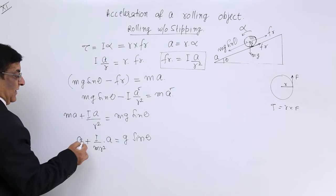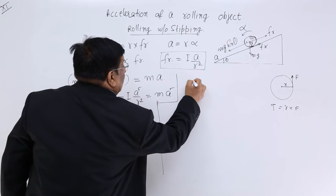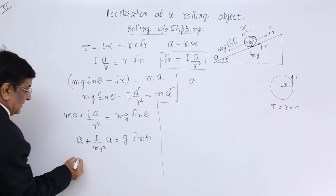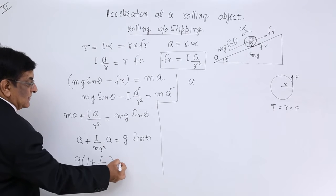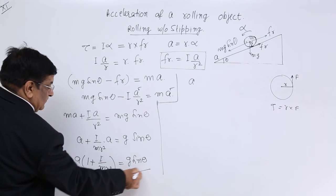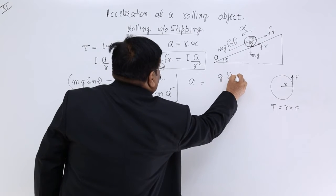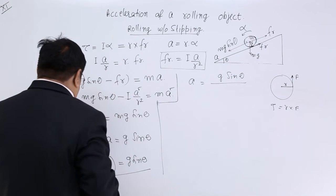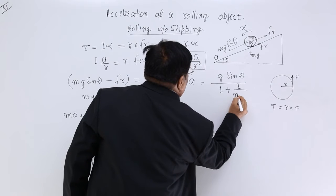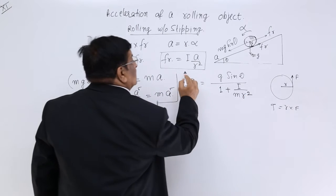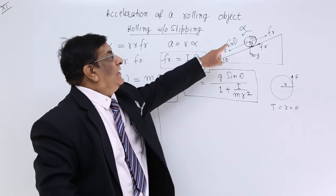Taking A as common factor: A times (1 plus I upon MR squared) equals g sin theta. Therefore, acceleration A equals g sin theta divided by (1 plus I upon MR squared). This is the acceleration of the roller coming down with rolling motion.